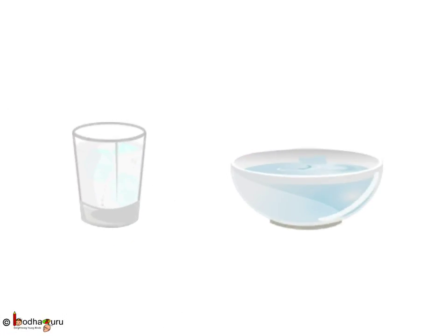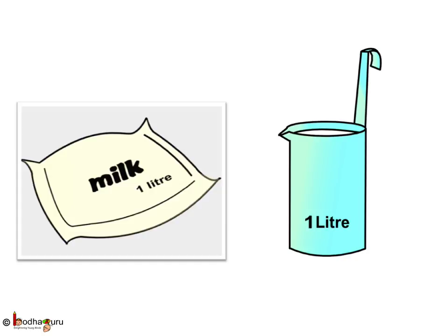Now a bowl can hold more milk than a glass because it is wider. So if you pour 1 glass of milk in a bowl it would look very little in the bowl. So we need a unit to measure how much a pot or container can hold. That unit is litre. You may have seen a 1-litre milk packet. This measuring cup can hold 1 litre of liquid.